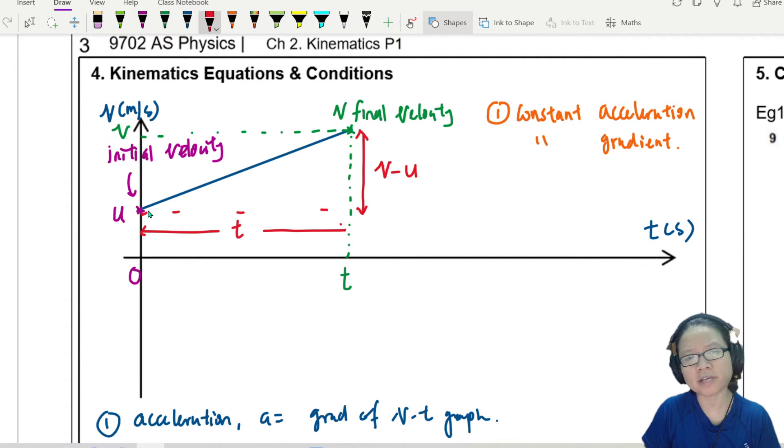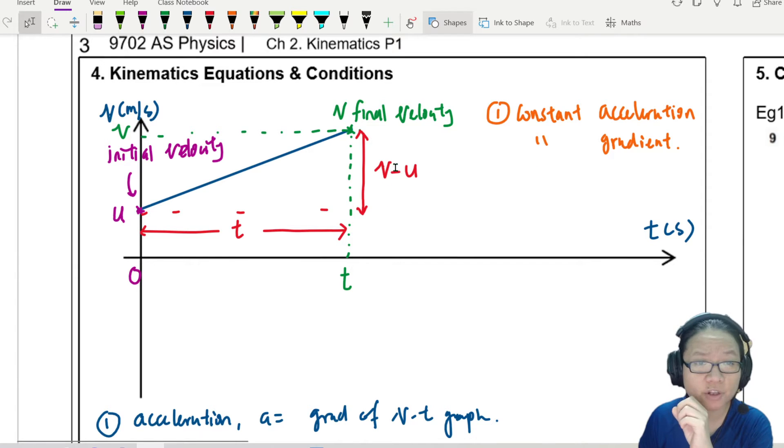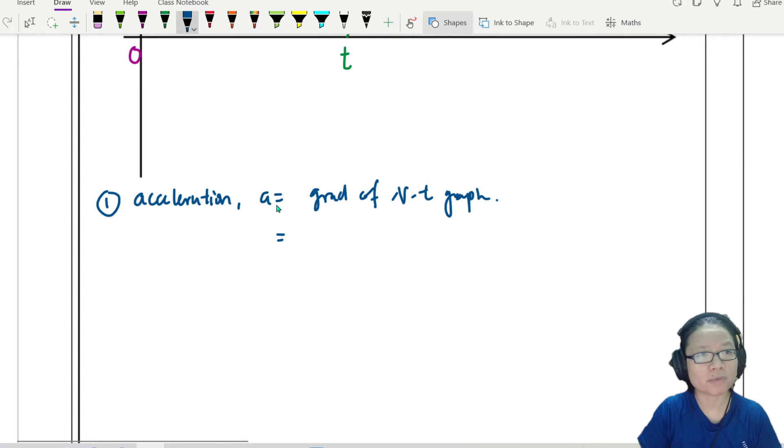And of course, the time taken for the speed to change from v to u is t. So if you feel that this expression is very familiar, we are taking the change in velocity divided by the change in time. So from here, a will be equal to v minus u over t.